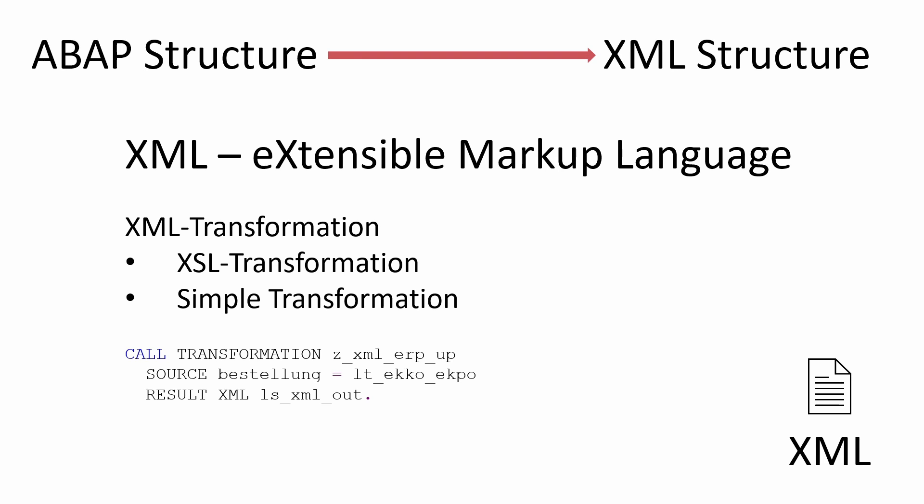The abbreviation XML stands for Extensible Markup Language and represents a markup language for the representation of hierarchically structured data. An XML transformation can be mapped in the SAP system in two ways: XSL transformation and simple transformation. The difference lies in the implementation. XSL transformation is based on the XSLT standard — Extensible Style Sheet Language Transformation. Simple transformation, on the other hand, is SAP's own programming language that also enables the transformation of ABAP data into XML and vice versa.